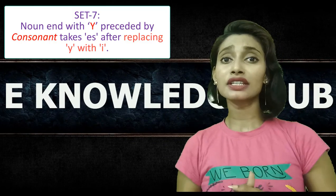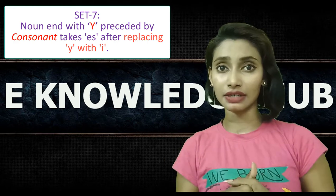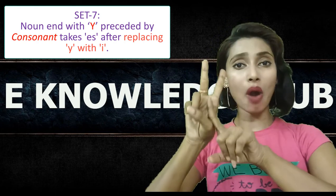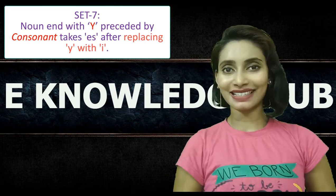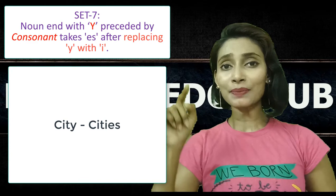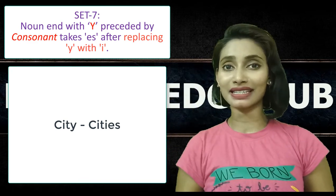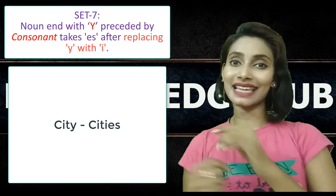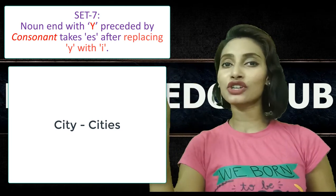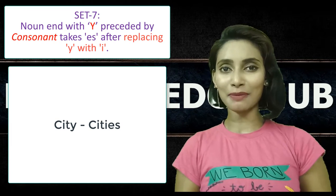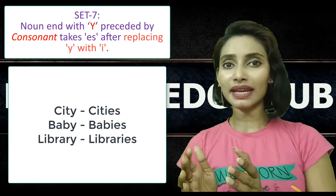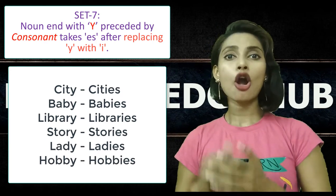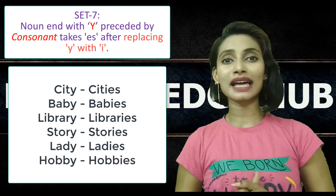In set 6 and set 7, the nouns end with letter Y preceded by a consonant. For such nouns, before adding ES we have to replace Y with I. For example, city ends with Y preceded by T which is a consonant. Hence the plural form is cities, spelled C-I-T-I-E-S — Y is replaced by I and ES is added. More examples: baby, babies; library, libraries; story, stories; lady, ladies; hobby, hobbies. So these are the nouns under set 7.